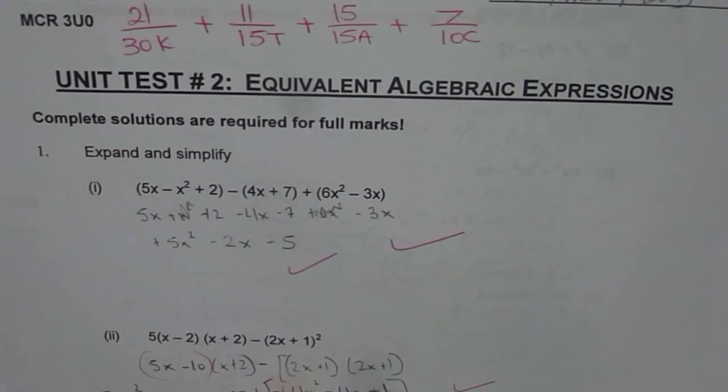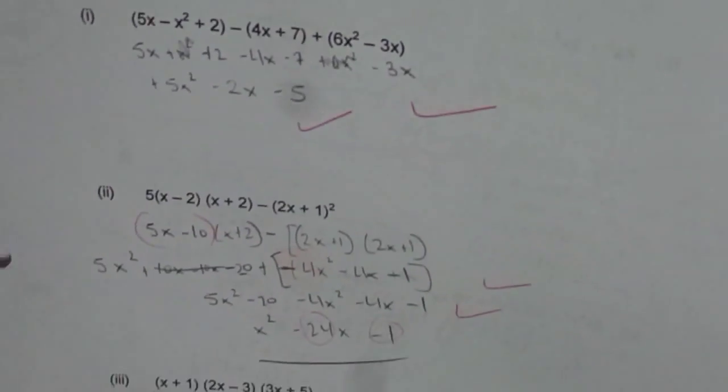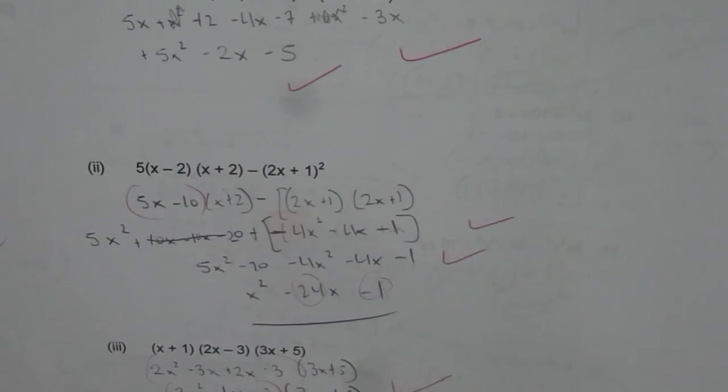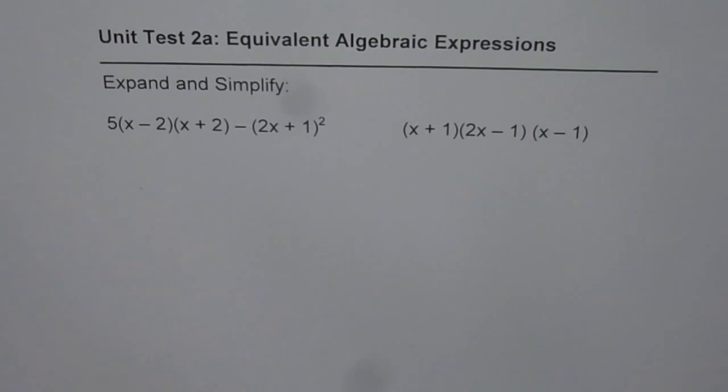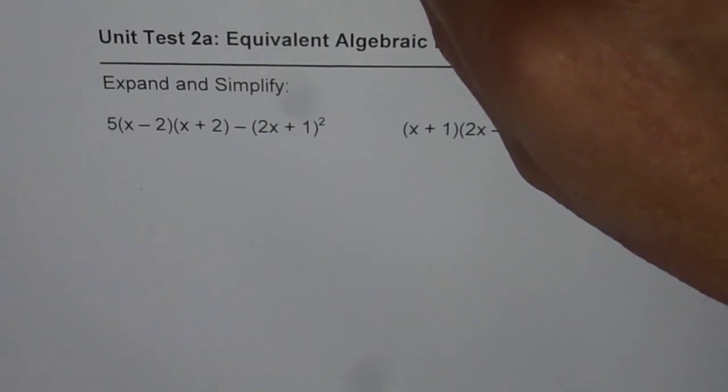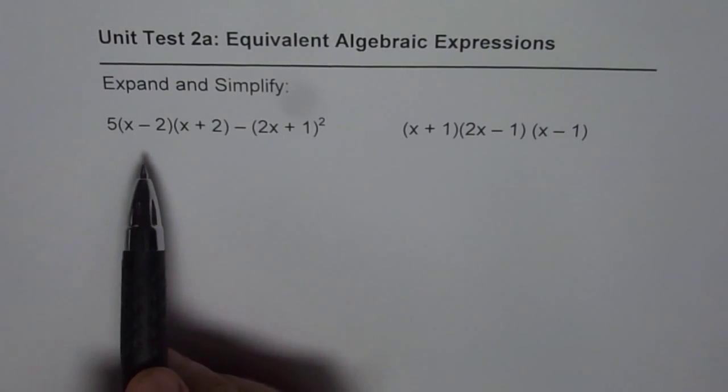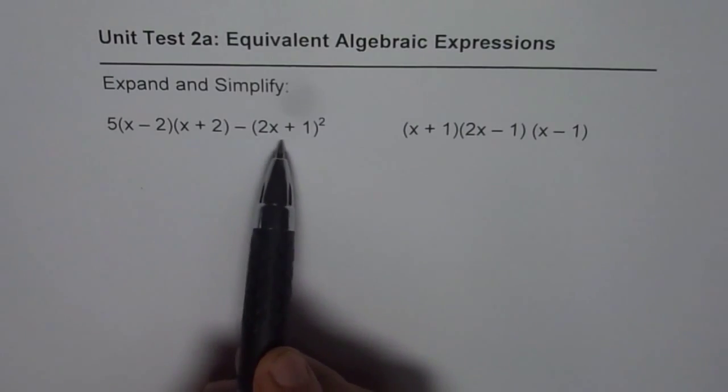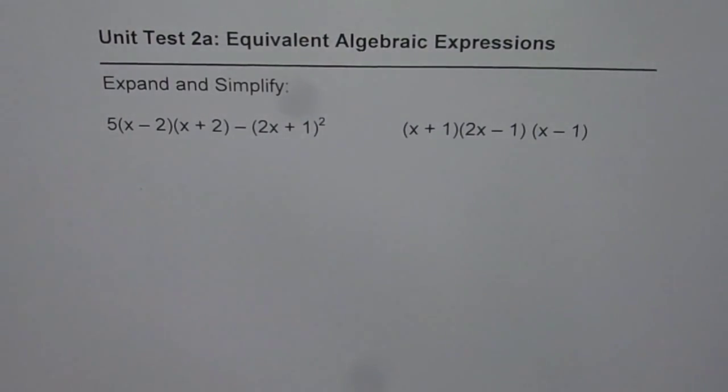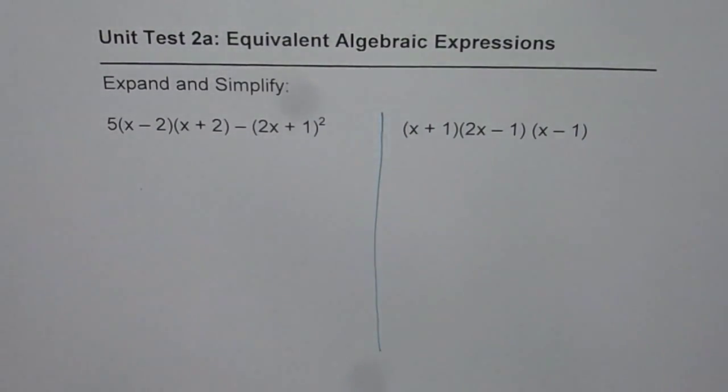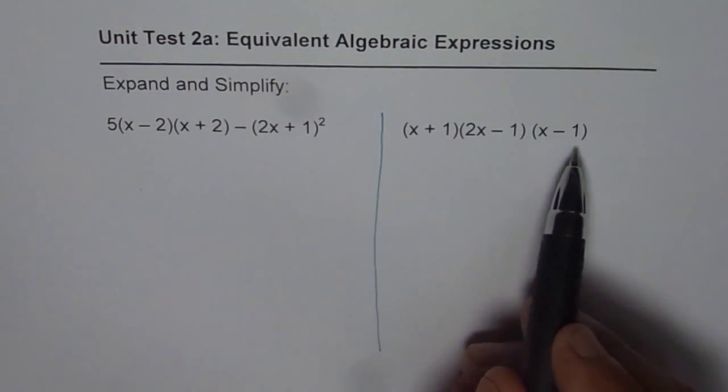Here are two questions from the test paper which I'll take, which is part 2 and part 3. And then we'll have a few more which will deal with fractions. So, let's begin with these questions. The first one here is expand and simplify 5 times (x - 2) times (x + 2) minus (2x + 1) whole squared. I have taken two questions on this page, so we'll solve both of them. The other one is (x + 1) times (2x - 1) times (x - 1).